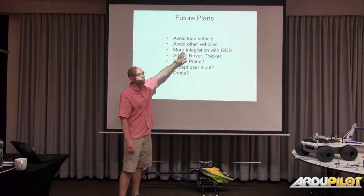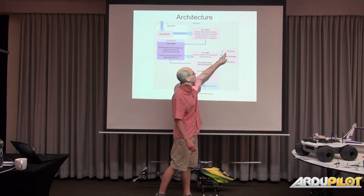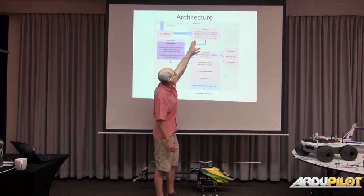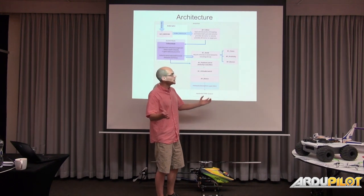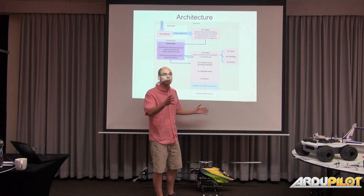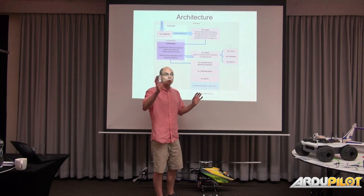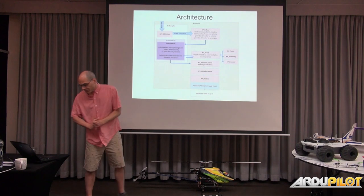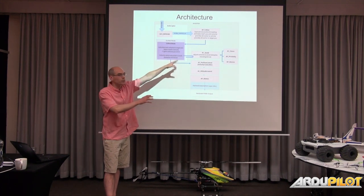I'd also like to add avoidance for other vehicles. Right now feeding into the ACAvoid library we support fence, rangefinders, and beacons. I'd really like to take some of the APFollow code — which is monitoring the lead vehicle — allow it to support maybe 20 or 30 vehicles, break it out into a new library, and feed that into the avoidance library. Someone asked: isn't that roughly what we're doing with ADSB targets? Definitely — the monitoring of other vehicles' positions is done in ADSB. Maybe we can take that logic out of ADSB and put it in a new shared library.